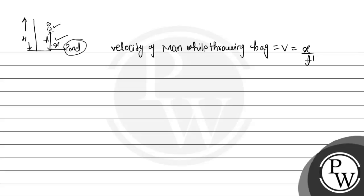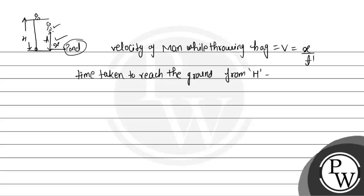Now t-dash is the velocity — rather, the time — available to the person after they throw the bag. We can find its value in terms of capital H and small h. First, the time taken to reach the ground from height H: using the second equation of motion, s equals ut plus half g t squared. Total height is H, initial velocity is zero (free fall), so H equals half g t1 squared. Therefore t1 equals square root of 2H divided by g. This is equation number two.